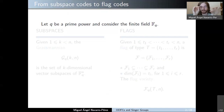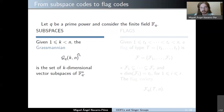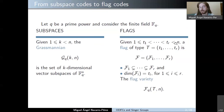Let me give some preliminaries on constant dimension codes and flag codes. We consider the finite field FQ of Q elements. For integers K and n, we can consider the Grassmannian of dimension K of FQ to the n, which is the set of K-dimensional vector subspaces of FQ to the n. Similarly, if we consider an increasing sequence of positive integers T1 to TR, a flag of type capital T is a sequence of nested subspaces of FQ to the n whose dimensions are given by the type vector. The flag variety of type capital T is the set of all flags of this type on FQ to the n.